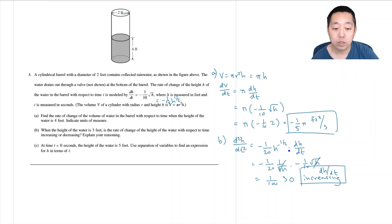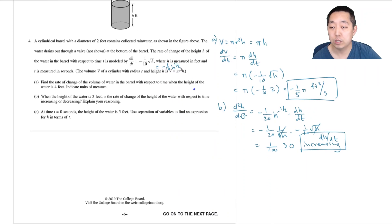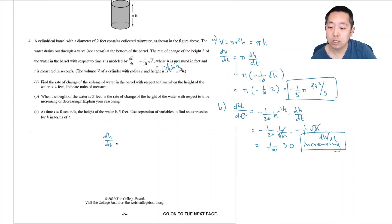At time t equals zero seconds the height of the water is five feet. Use separation of variables to find an expression for h in terms of t. I start with dh/dt equals negative one over ten times the square root of h, then bring dt up and the square root of h down.